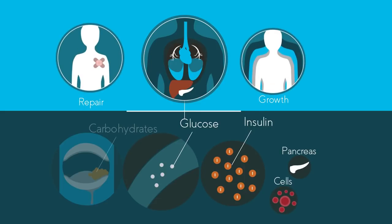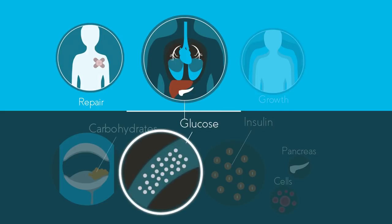If you have diabetes, your body cannot make proper use of this glucose, and so it builds up in our blood and cannot be used by cells. There are two main types of diabetes.